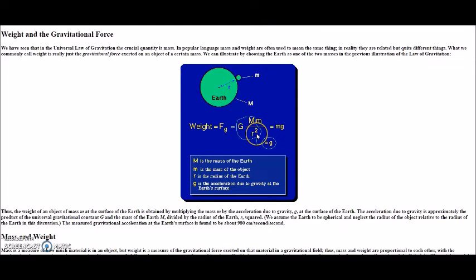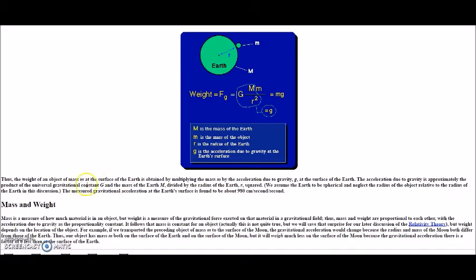But I bring it up because that number they use for the mass of the Earth, the gravitational constant along with this radius, like they say here, it's the product of G times M divided by this R squared. This number comes out to equal this G, which is the acceleration due to gravity. Now coincidentally, the measured gravitational acceleration at the Earth's surface is found to be 980 centimeters per second second, which is 9.8 meters per second squared.